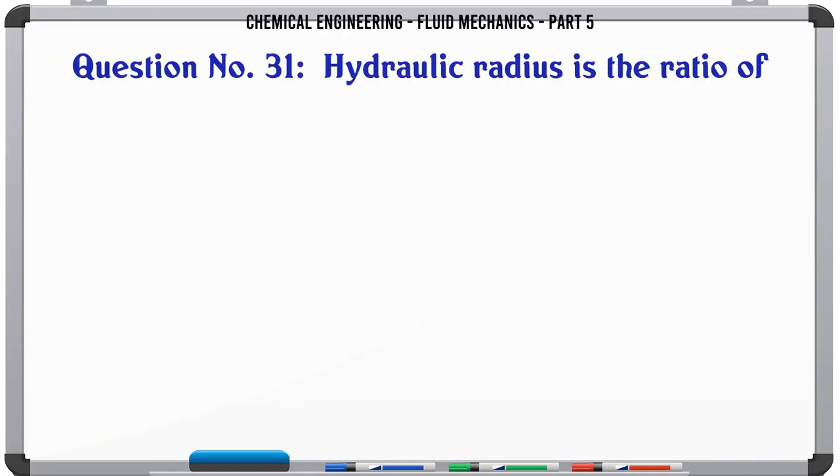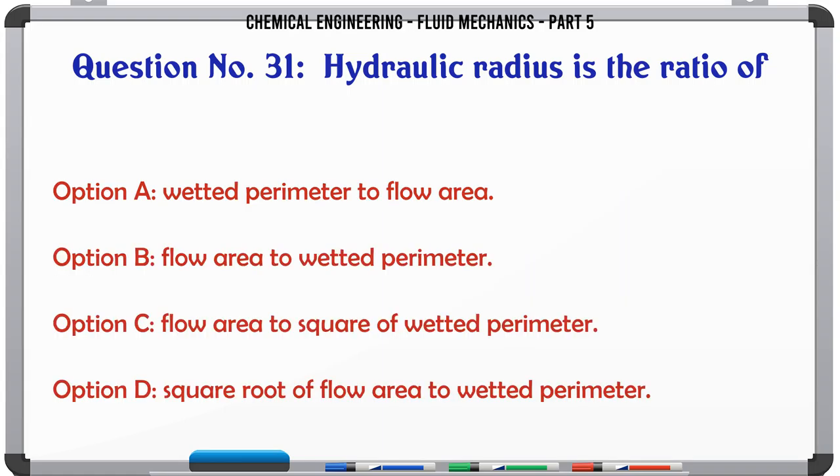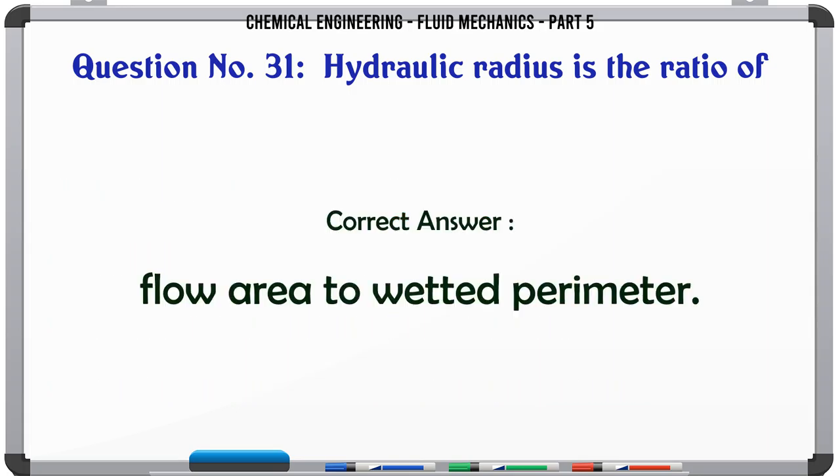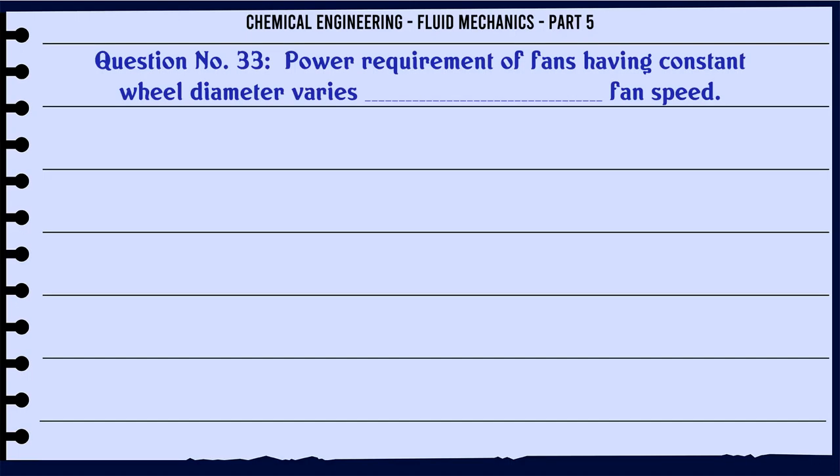Hydraulic radius is the ratio of: a) wetted perimeter to flow area, b) flow area to wetted perimeter, c) flow area to square of wetted perimeter, d) square root of flow area to wetted perimeter. The correct answer is flow area to wetted perimeter. The unit of bulk modulus of elasticity for a liquid in SI unit is: a) N, b) N/m, c) N/m², d) N/m³.